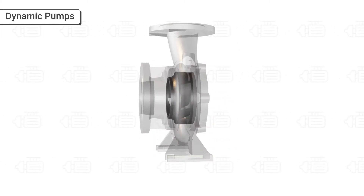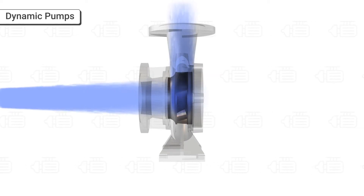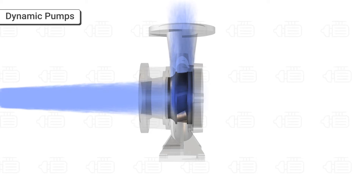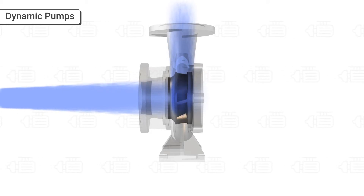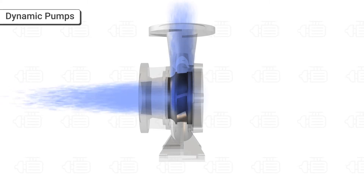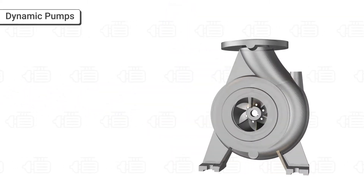The fluid is sucked into the rotating impeller along its axis and is moved out by centrifugal force along through the impeller. The action of the impeller increases the fluid's velocity and pressure and also directs it towards the pump outlet.